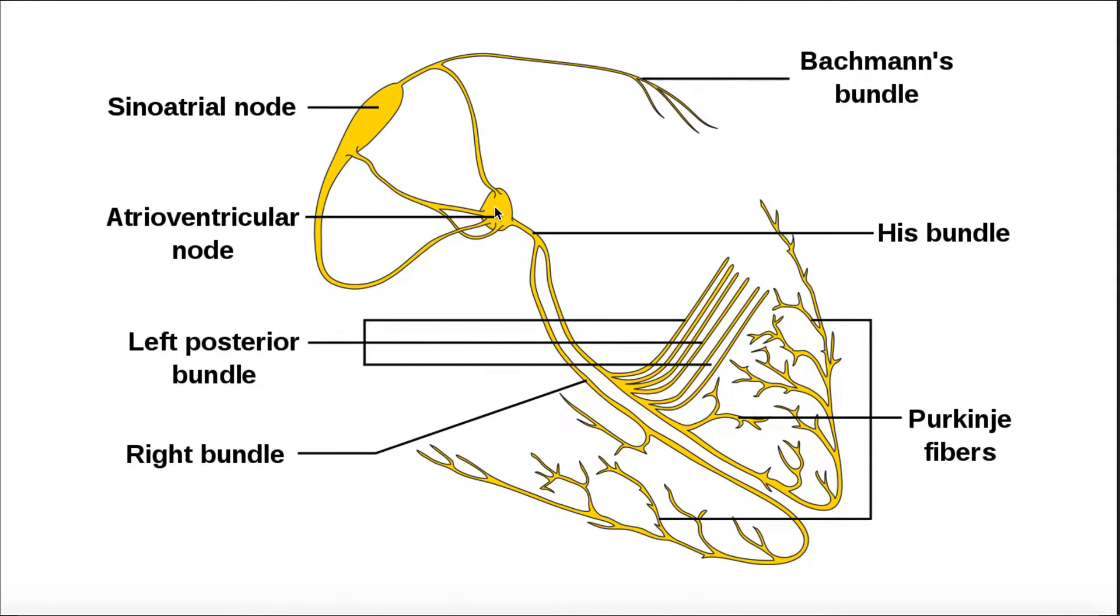There's a few things about the AV node that you need to understand. One, it eventually leads to the Hiss bundle or AV bundle or bundle of Hiss, as it's called, which projects into the ventricles. In order for the ventricles to contract, the AV node has to send impulses more distally through these pathways down here. So when that happens, the ventricles contract.